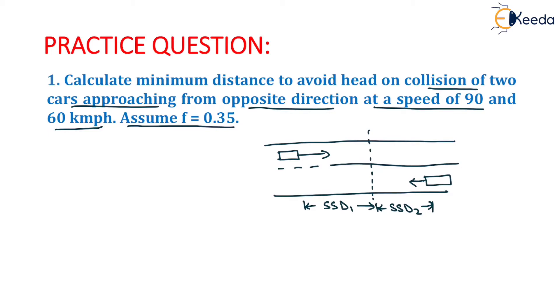Now we have to compute the value of SSD1 plus SSD2. The formula for SSD is 0.278V times TR plus V squared divided by 254 times F plus or minus S. Here the road is flat because the value of S is not given.